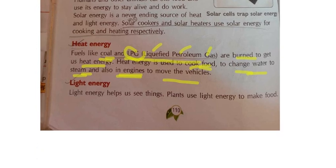Now moving to the third type of energy. Light energy helps us see things. Without light, can we see anything? No. Morning, whole sunlight will be there and with the help of sunlight we will be able to see the things. Night time we are having power - we will be using tube lights and bulbs. So this light energy will be helping us for seeing different things. Plants use light energy to make food. Without sunlight, plants cannot make food. Plants should grow means they need water, air and sunlight. So with the help of light energy, the plants will be making the food.